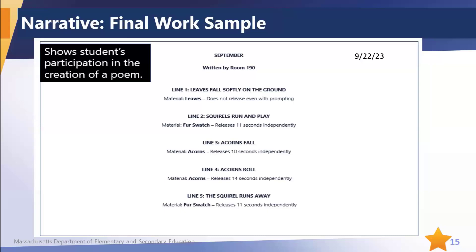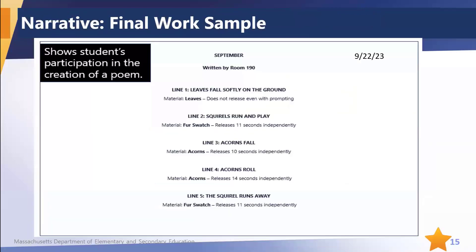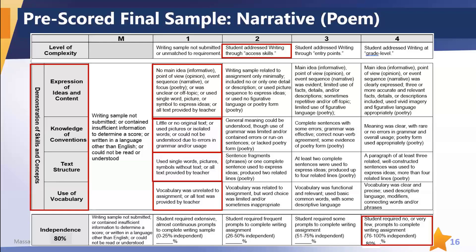Looking back at the sample, the teacher noted that he didn't really release even with prompting in one instance, then he released within 11 seconds, and then within 10 seconds. That gives you information going forward about how much latency time to build into your communication exchanges. The overall score is determined by the rubric. The teacher filled it out as an access skill, everything pre-populated to one, and the teacher noted that in four out of five opportunities he was independent — so he was 80% independent.